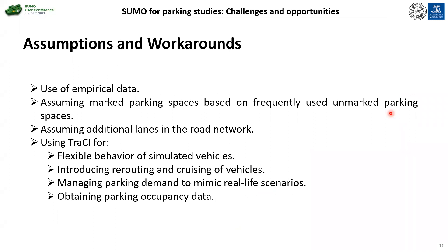The assumptions we have made while trying to simulate our test area include: using a lot of empirical data given we had very little data to work on, using knowledge of the test area to assume a few things and create empirical data about parking demand and parking inventory. We are also assuming that some of the unmarked parking spaces which are frequently used are marked parking spaces in order to represent them in SUMO. We are adding some additional lanes in the road network so that on-street parking does not block the flow of traffic in SUMO. We are heavily using TraCI to remove the rigid behavior of simulated vehicles, introducing rerouting among parking spaces, and introducing a cruising speed for vehicles — since in real life, vehicles cruising for parking tend to travel at a lower speed than normal traffic.